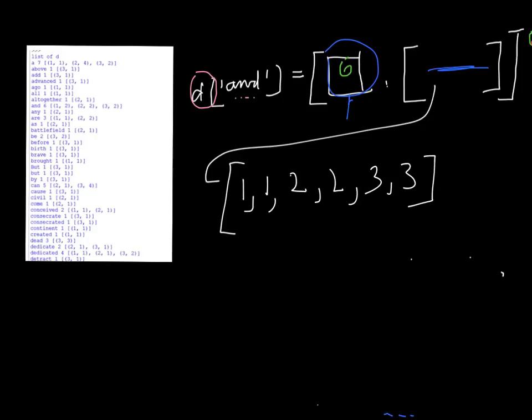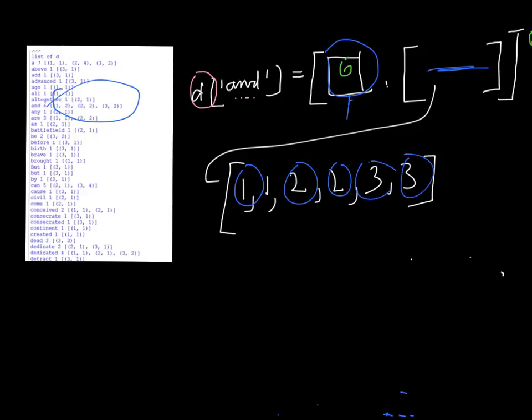It's going to list it like this: it found the word AND on line one, line one, line two, line two, line three, line three. This is an intermediary form, because that's not the way it ends up being listed. There'll be a function called squish that will change the format to a much more compact form.